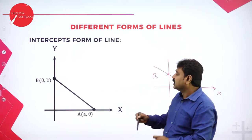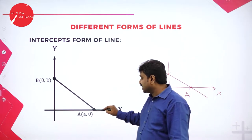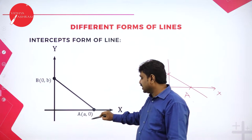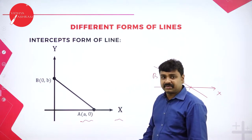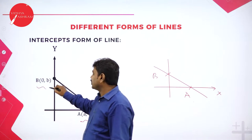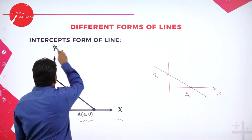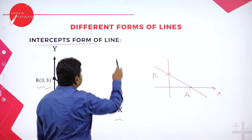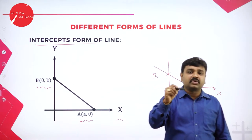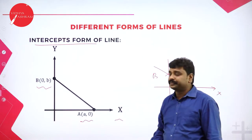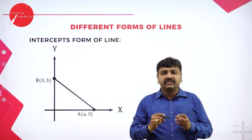What is meant by intercept? The point where the line cuts the axis — that point we call it as intercept. In the diagram the line is cutting the x-axis at a, so we call it as x-intercept, and it is cutting the y-axis at b, we call it as y-intercept. Now we will discuss intercept form of line: when they give x-intercept and y-intercept, what is the equation of line? That's what we will derive.